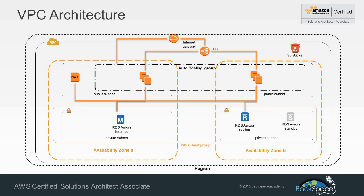To allow those databases to get updates through to the internet, we're going to have a NAT instance that will connect up through to an internet gateway. Our internet-facing traffic will be handled through an elastic load balancer, which will distribute traffic across an auto scaling group of EC2 instances containing our WordPress application. For our static assets and latest code that we bootstrap into our instances on startup, we'll have an S3 bucket that connects into our VPC through an S3 VPC endpoint, which is a new feature of VPC.